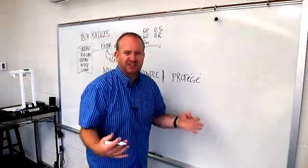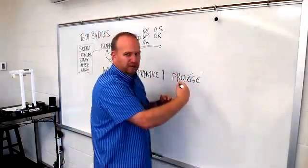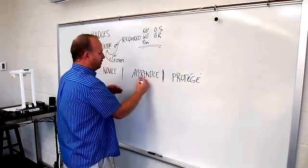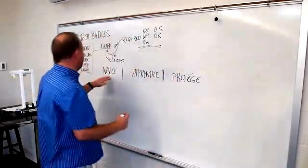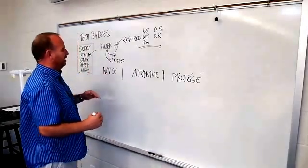We have novice level, apprentice level, and then protégé. We used to call it mentor but the teacher is still the mentor - a protégé is a lot higher than an apprentice. Apprentice is just someone that's maybe trying it out and a novice is of course someone just at the beginning.